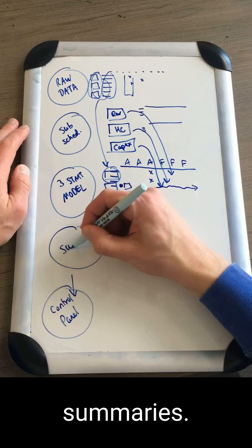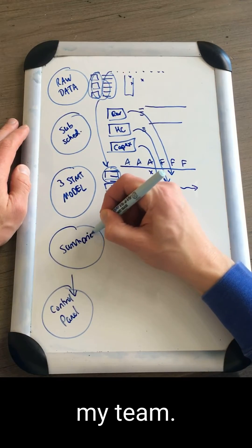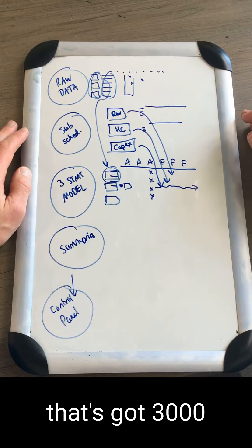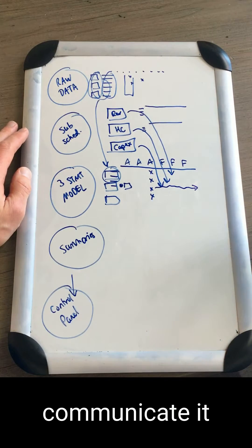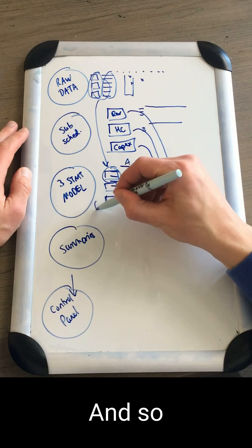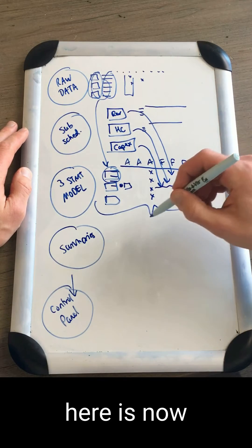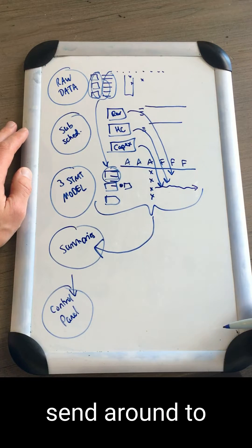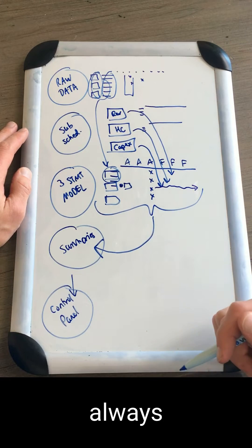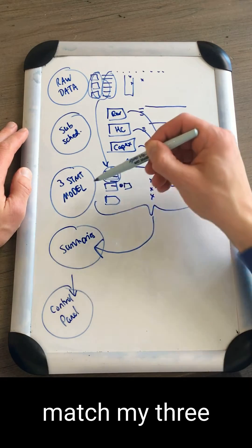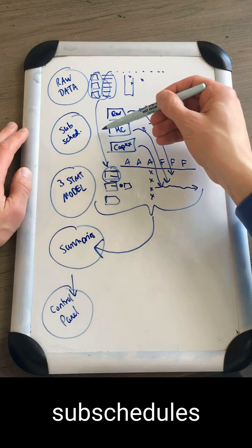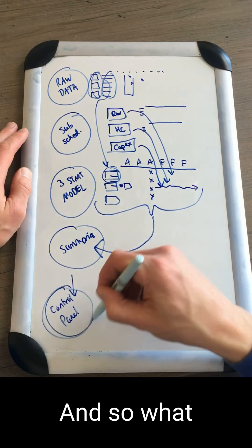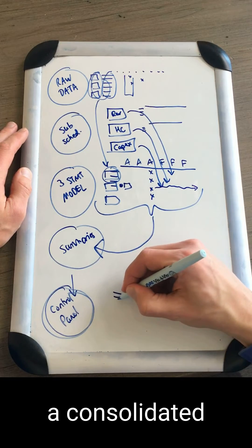The last thing is I need to be able to build summaries so I can share this with my team. It doesn't make sense to have somebody look at a financial model with 3,000 rows — I need to condense and communicate it in a way people can understand. Everything from the back of the file flows into a summary that I can PDF and send around. I'm always thinking about double checks: do the totals on the summary match my three statement model?